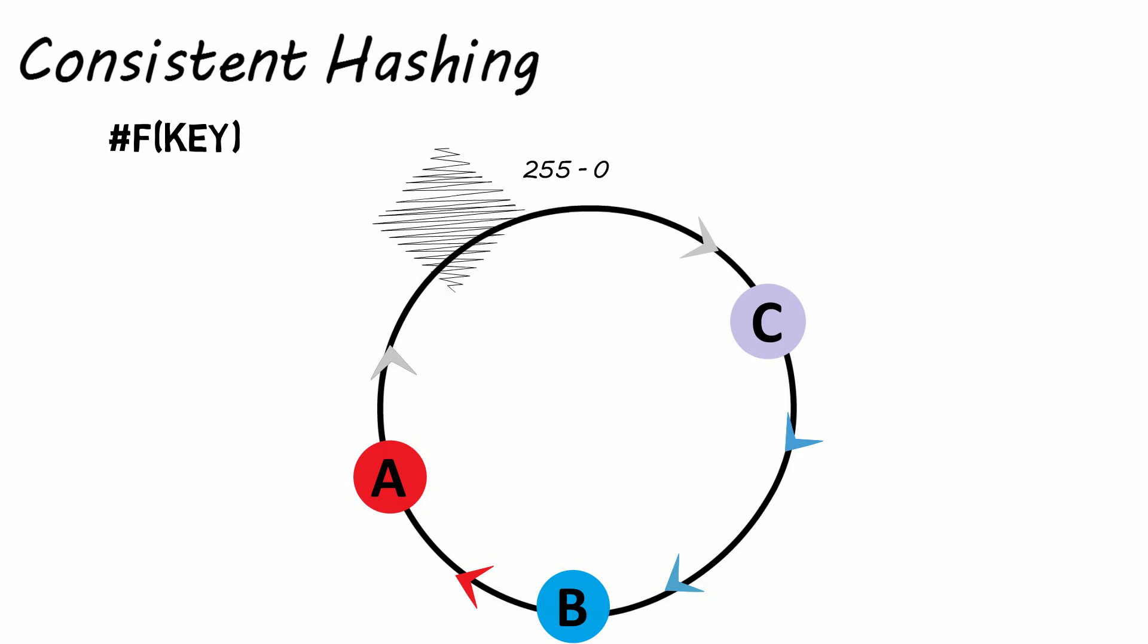Now if we add another server D using the hash function again, then only a fraction of the requests will change which server handles that request, as only the requests that check clockwise and find server D first are affected.